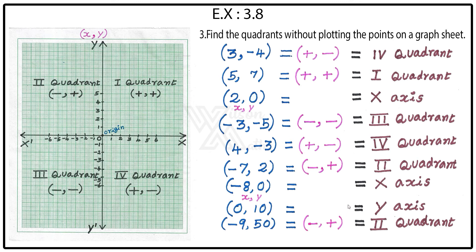Did you understand why we use the signs? Because the question says to find the quadrant without plotting the points — you should not plot, just see the signs and say the answer. If both are plus comma plus, it is the first quadrant; minus comma plus is the second quadrant; minus comma minus is the third quadrant; plus comma minus is the fourth quadrant.